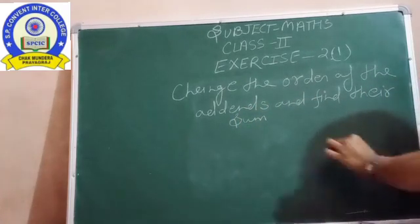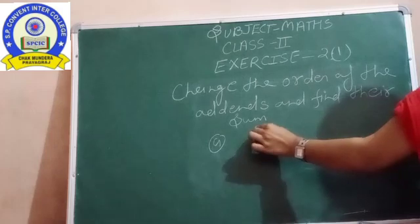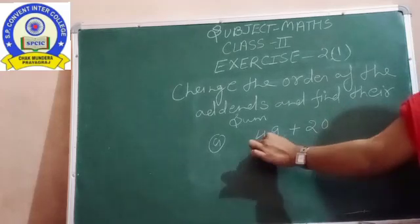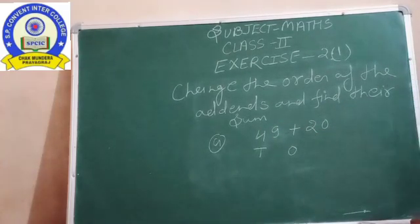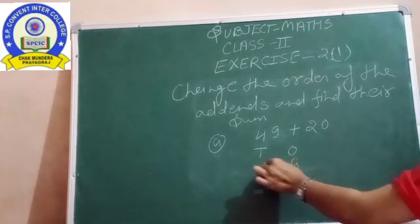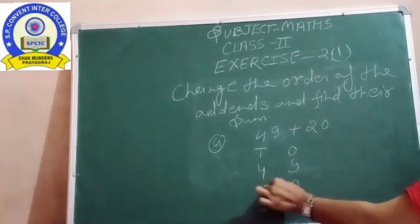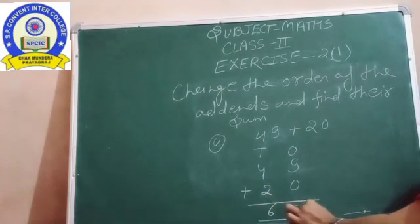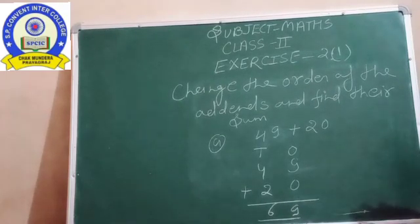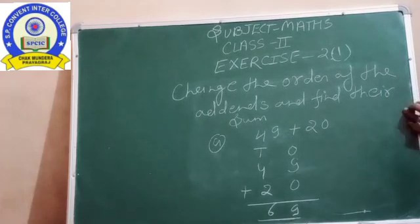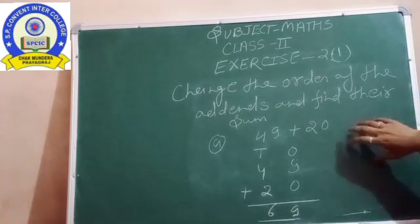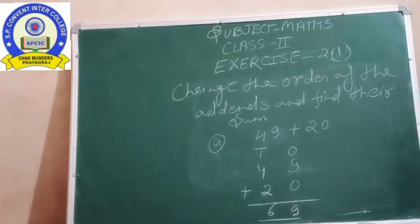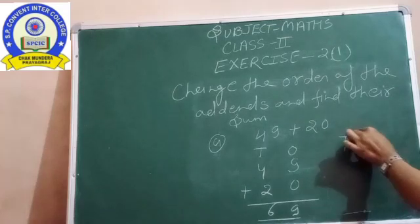See, the same number is given here: 49 plus 20. So here is your ones and here is your tens. Add them. You have 9 and 4, then 0 and 2. 9 plus 0 is 9, 4 plus 2 is 6. What is happening in the order? You have to change the order. So change the order—put this number on top and this one below.